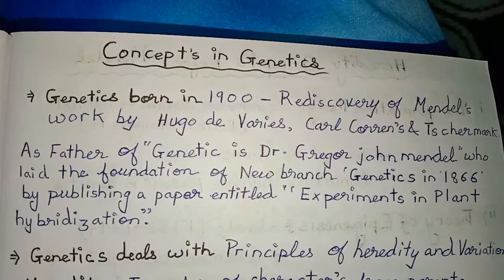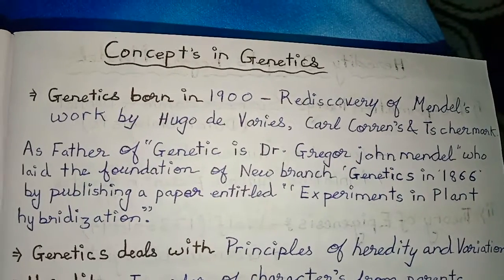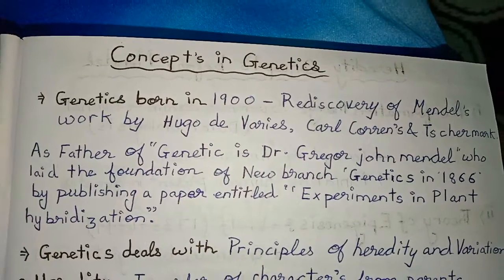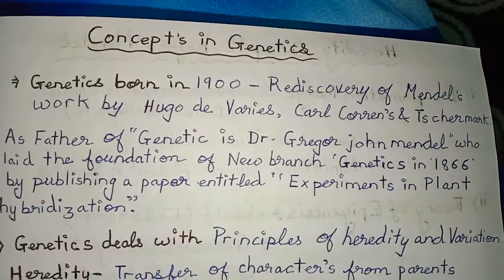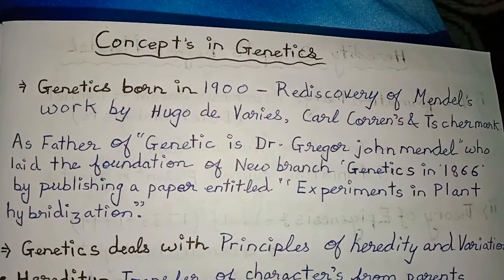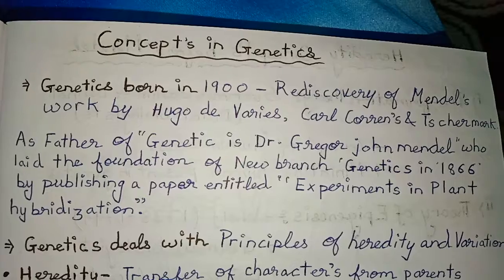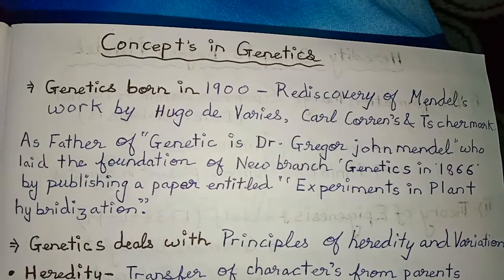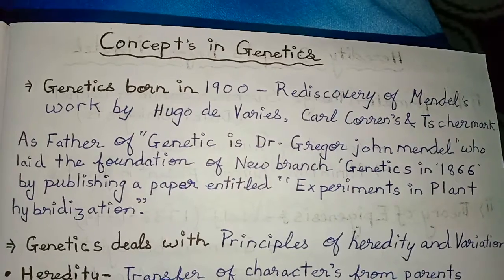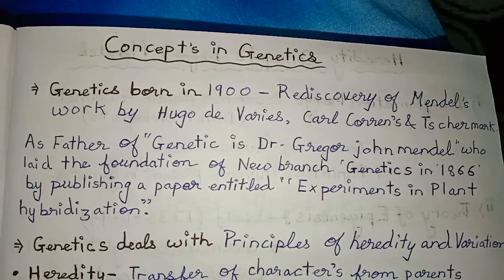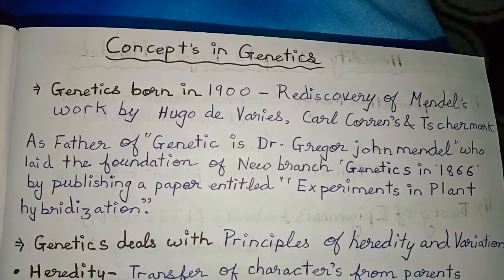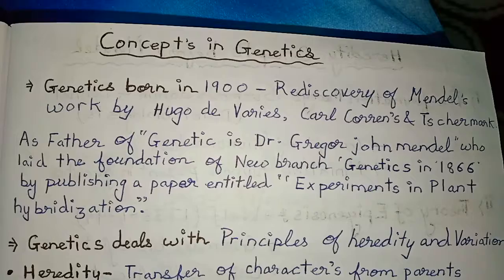Genetics spawned in 1900 — that is, we can say it's a rediscovery of Mendel's work by Hugo De Vries, Carl Correns, and Schermak. The father of genetics is Dr. Gregor John Mendel, who laid the foundation of the new branch of genetics in 1866, and the rediscovery of Mendel's work in 1900 was by these three young scientists.